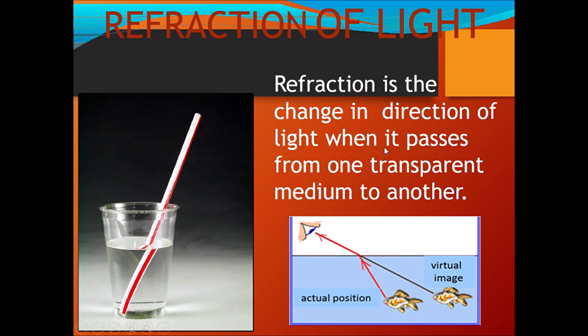So what is refraction? Refraction is the change in direction of light when it passes from one transparent medium to another. When the ray of light is passing from water to air, it is not following the same path — rather it is bending, changing its direction. This particular phenomenon of the ray of light changing its direction is known as refraction.